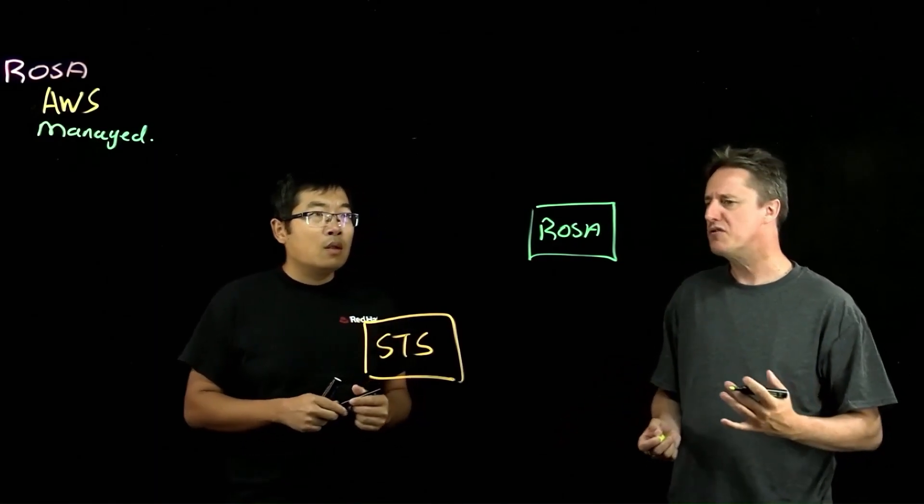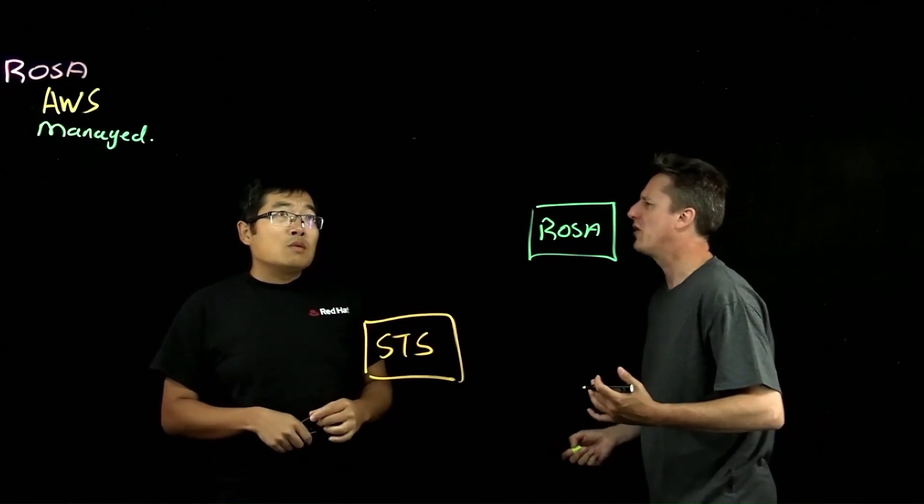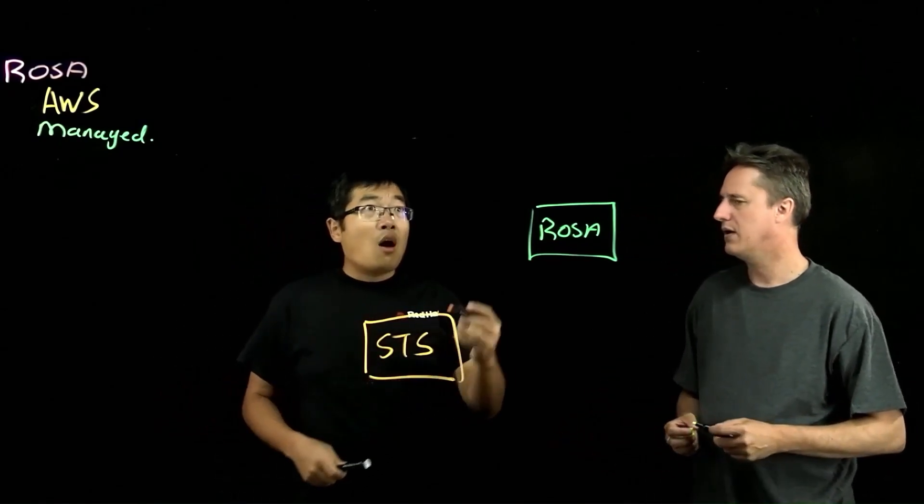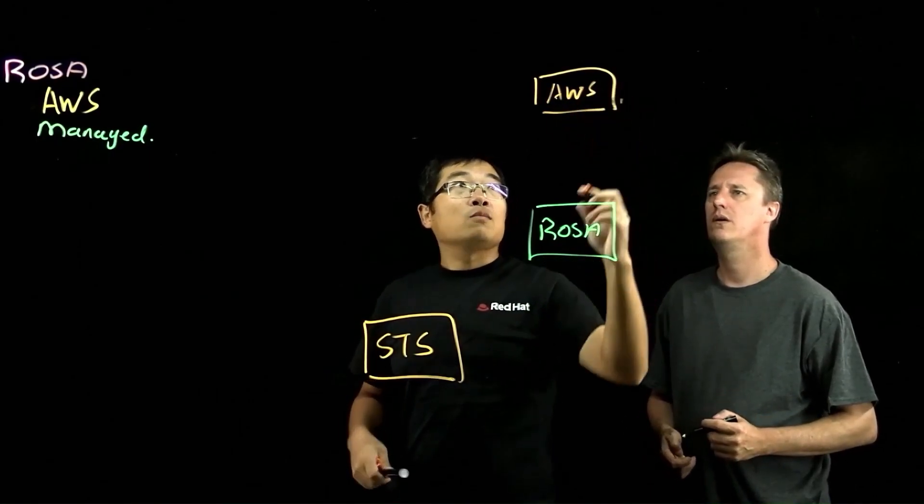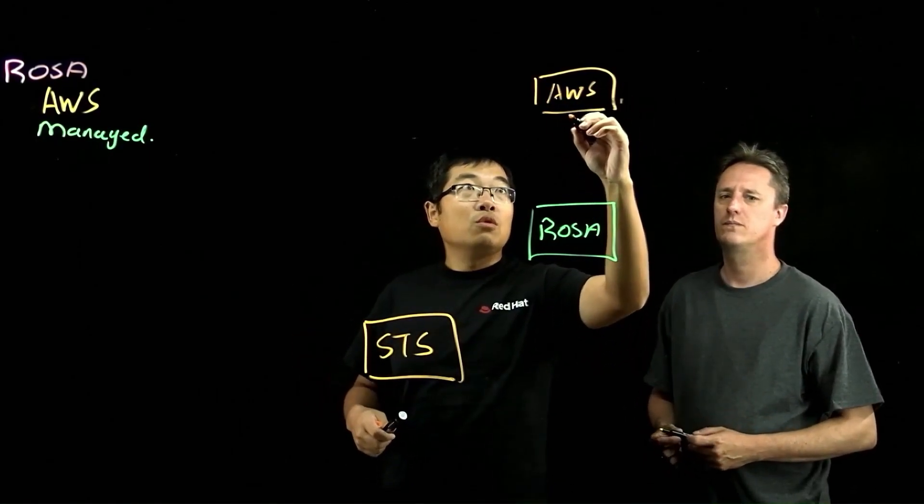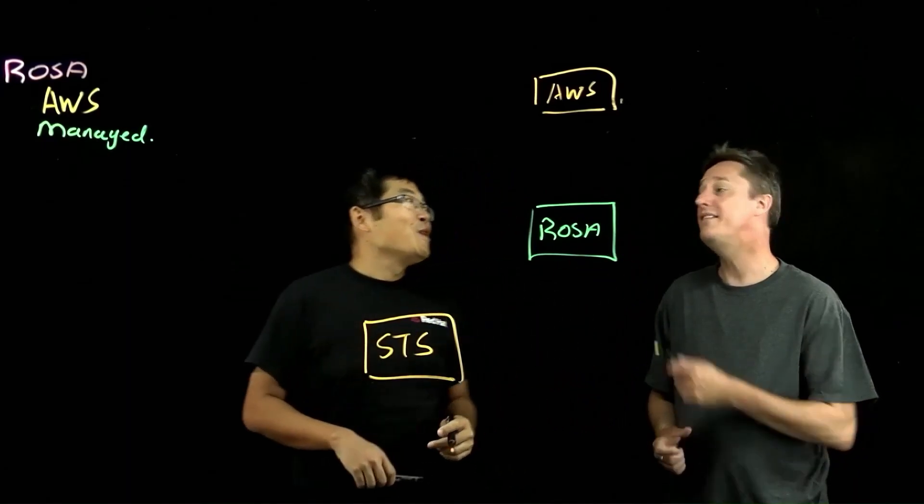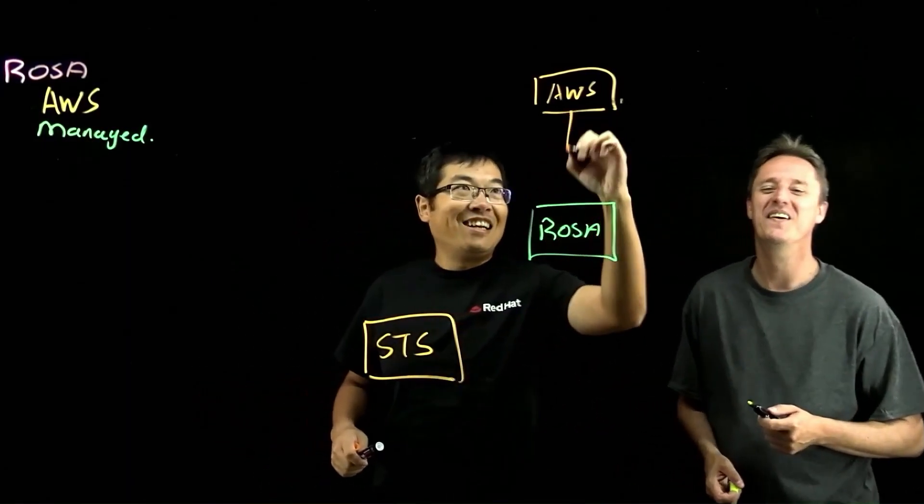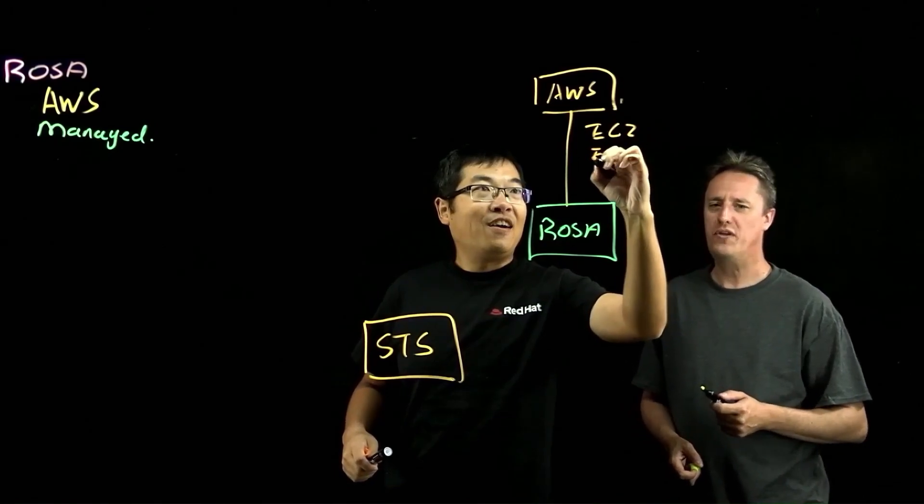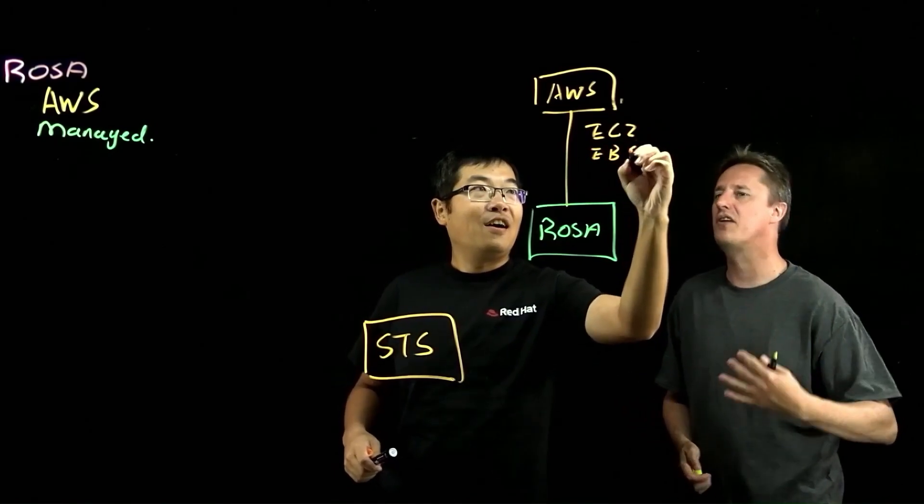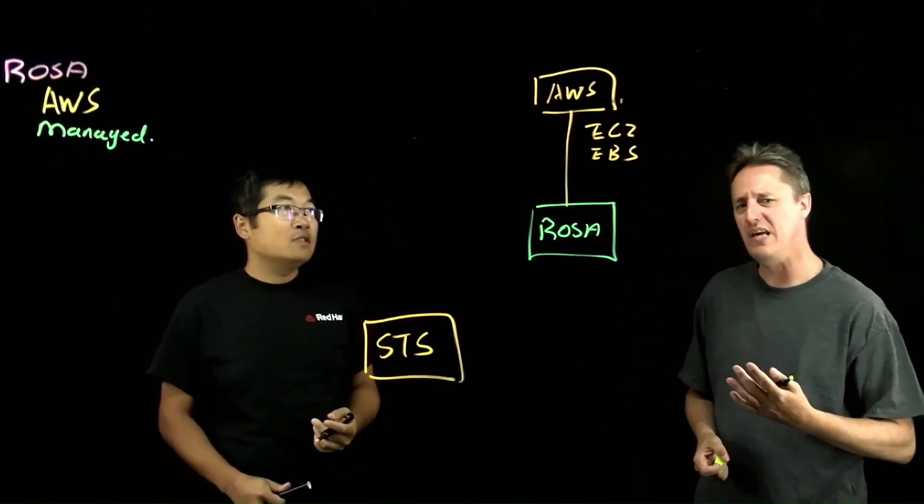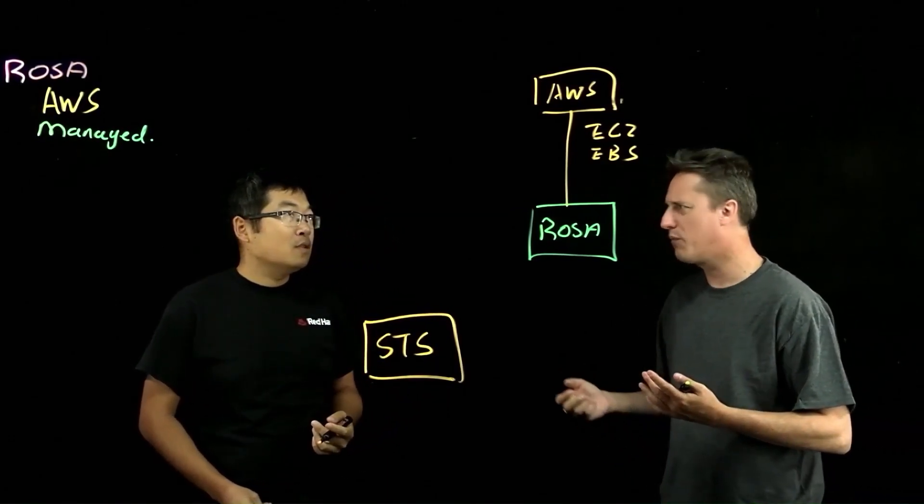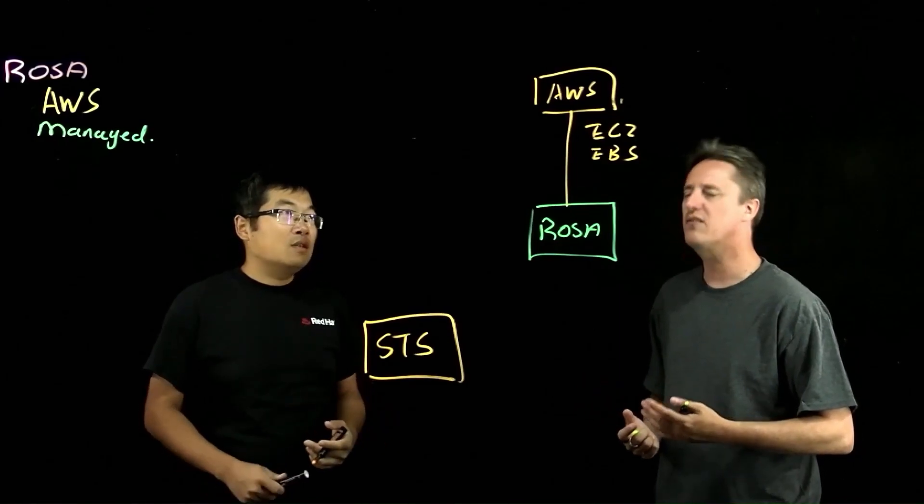Typically, what does OpenShift interact with from an AWS service point of view? There are a lot of AWS services we are integrated with. For example, EC2. And I'm assuming that is for the nodes as it scales up, scales down, or if it's provisioning new compute. And the EBS I'm assuming is for persistent volumes, those sort of things. Yes, exactly.